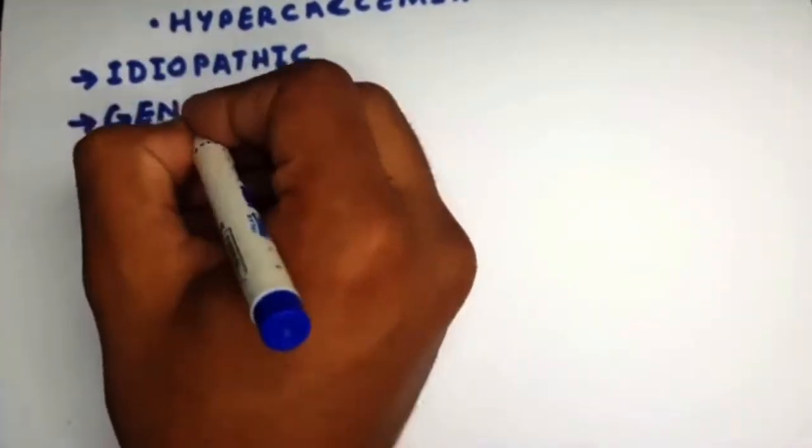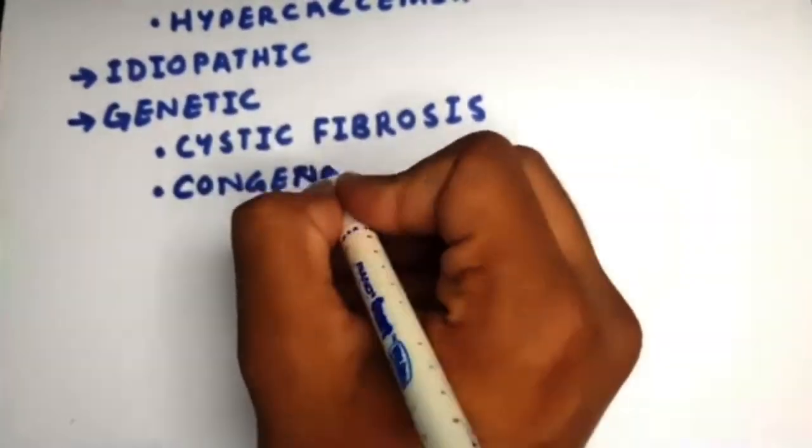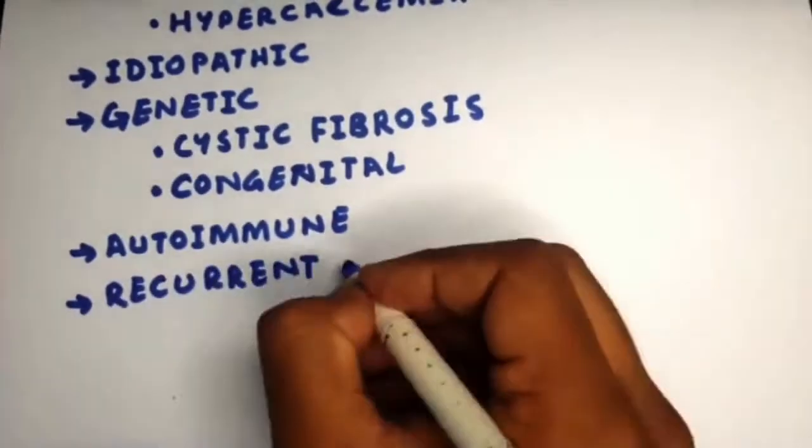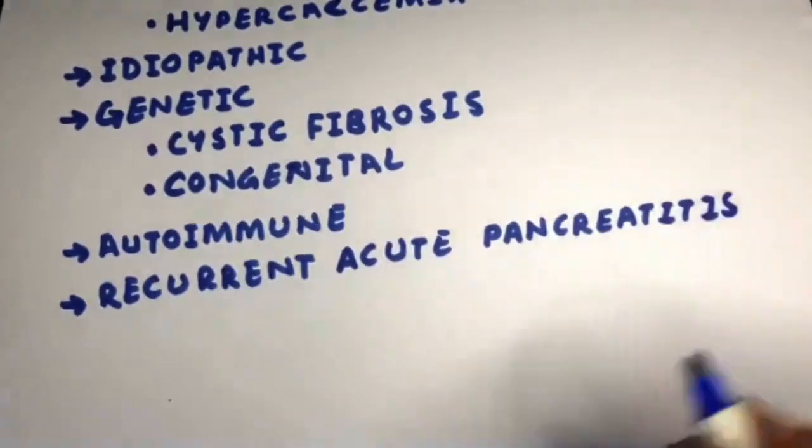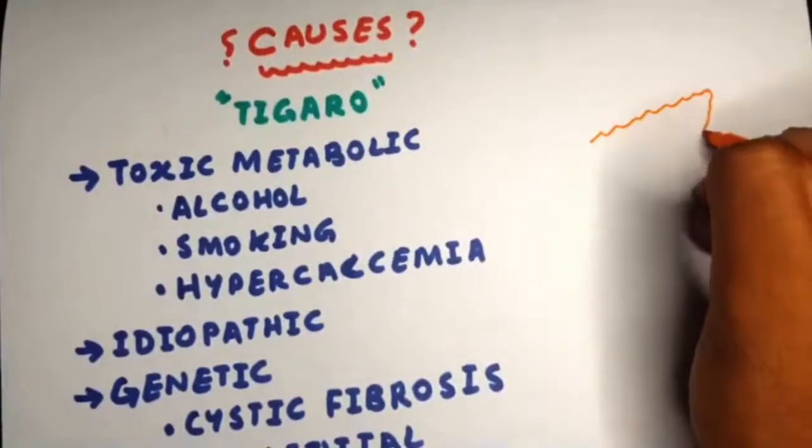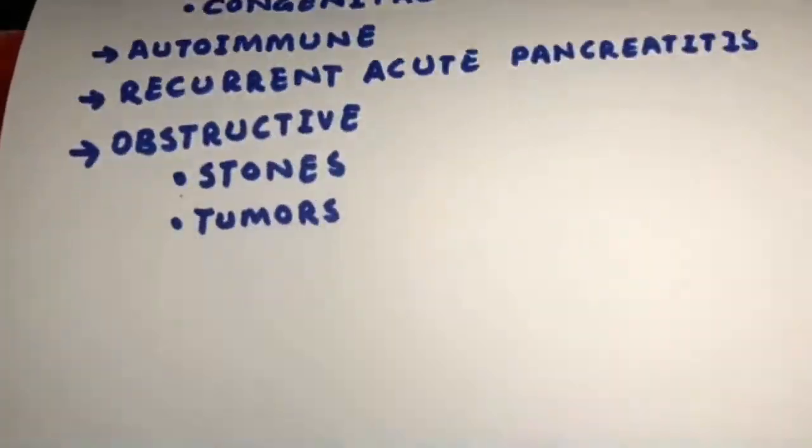It may be idiopathic, genetic including cystic fibrosis or congenital mutations in pancreatic enzymes, autoimmune, recurrent acute pancreatitis, or obstructive from stones and tumors. This pancreatic tiger is how you remember the causes.